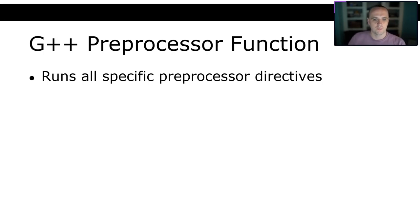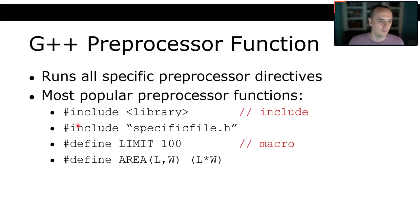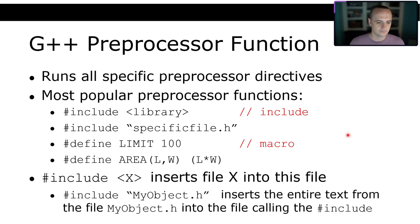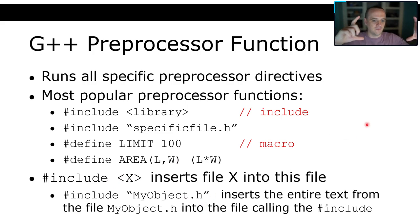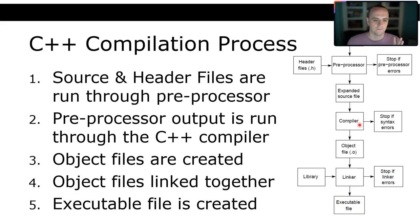The G++ preprocessor runs all the preprocessor directives. The most popular preprocessor functions are: including a library with '#include <library>', including a specific file with '#include "myobject.h"', or making macros. When you include a file, it literally takes that file, copies the text from it, and places it where you had that line. That's what the preprocessor does.